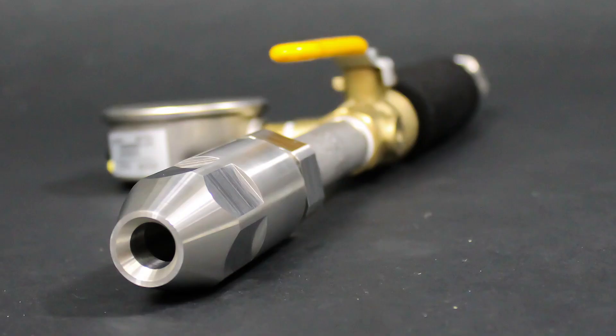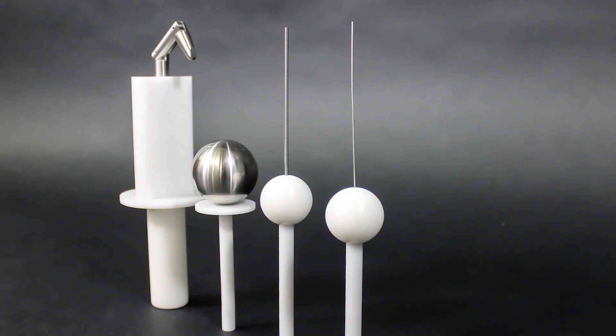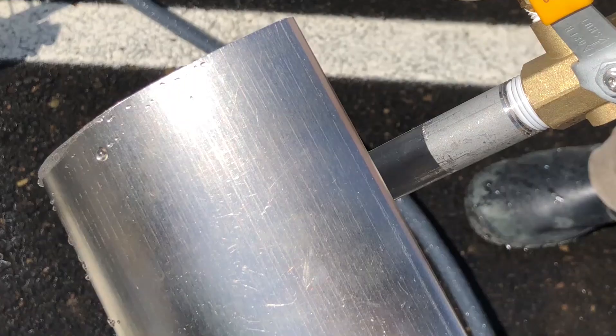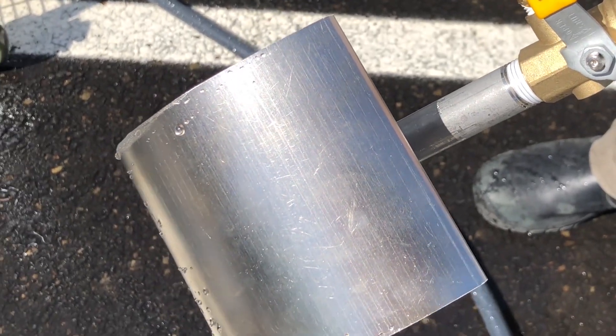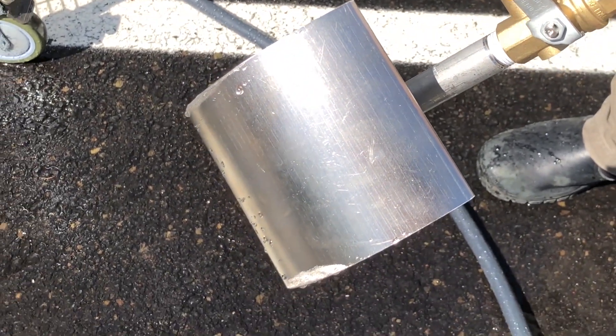These pieces of test equipment that we built in-house allow us to test two IP ratings, and those IP ratings are defined by the IEC 60529 standard. These pieces of test equipment allow us to test for both particulate ingress and water ingress.